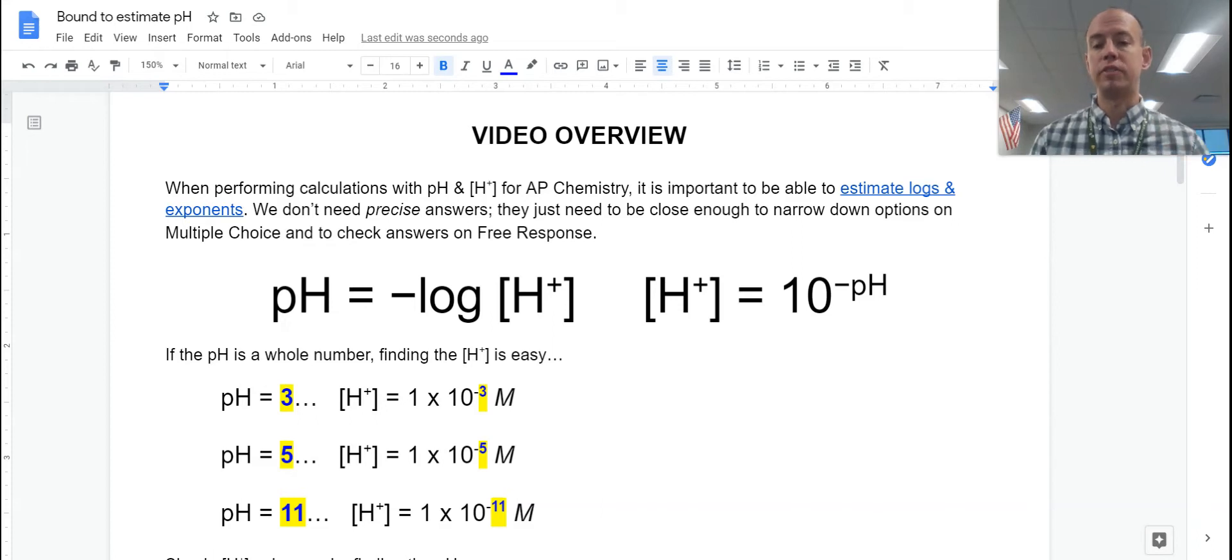So for this, it's a strategy where you just have to get close enough for multiple choice, eliminating options, or to make sure that your answer on a free response makes sense. If it's a free response, plug it into your calculator, you're good to go. But if it's multiple choice, or if you're just really trying to check quickly or ballpark, which sometimes you have to estimate in free response, you can do this.